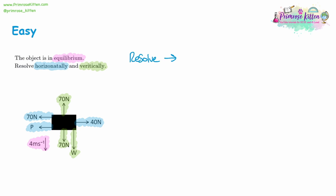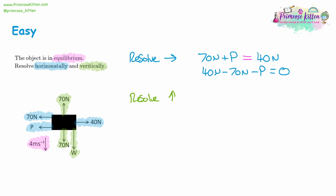With this current set of forces, the object is travelling down at 4 metres per second and that's not changing. If the speed isn't changing, all the forces are balanced. If it was speeding up going downwards, then the downward forces would be larger. But at constant speed, it's the same as the previous question. So let's resolve horizontally in the positive direction: we have 70 newtons and P on the left, and 40 newtons on the right. We move it all to the positive side — take away 70 and P to make it equal to zero. Then resolving vertically: going up we've got 70 newtons, going down we've got 70 newtons and W. We need to take away 70 and W to make it equal to zero.